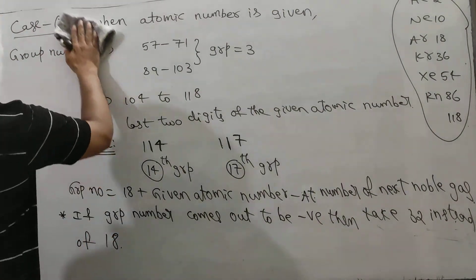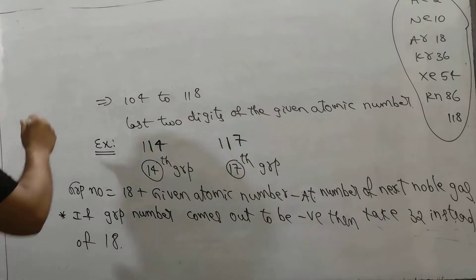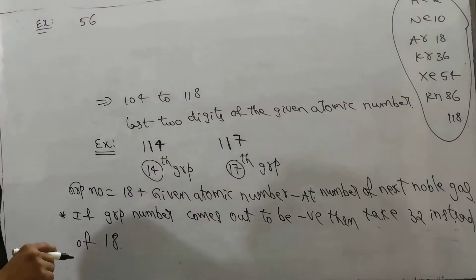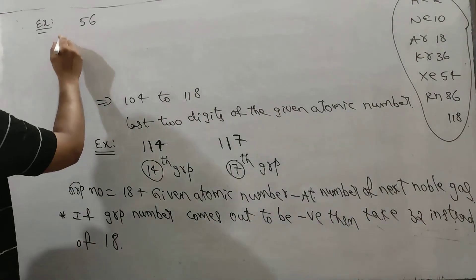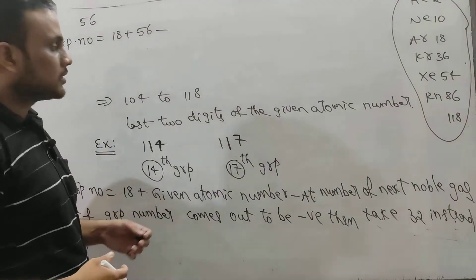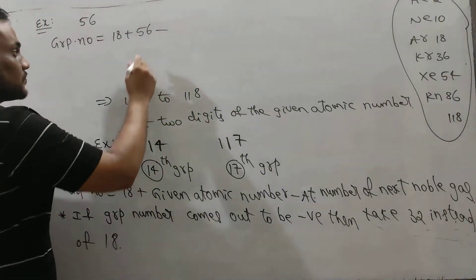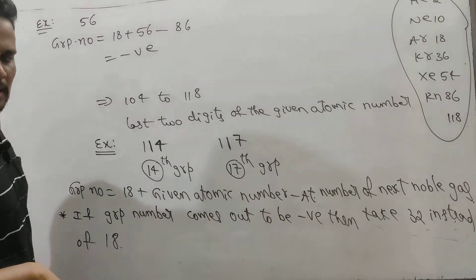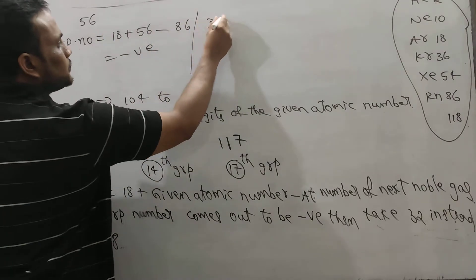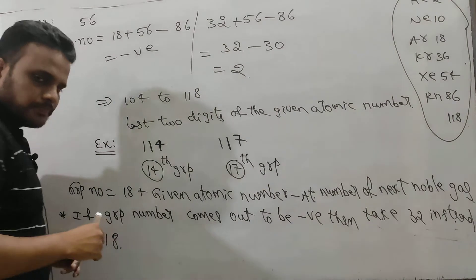By solving multiple questions, you can easily solve this in less than 40 seconds. Let's take one example — atomic number 56. Group number asked. How to calculate? Group number equals 18 plus given atomic number minus atomic number of next noble gas. The noble gas atomic numbers are 2, 10, 18, 36, 54 — after 54, the next noble gas is 86. Applying the formula: 18 plus 56 minus 86 gives a negative value. So we take 32 instead of 18: 32 plus 56 minus 86 gives minus 30, wait — that is 32 plus 56 minus 86 equals 2. Group number is 2.